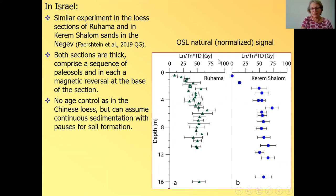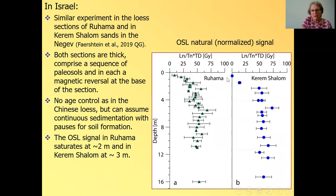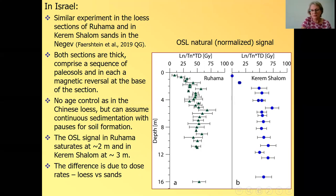Both sections are thick and there is a sequence of paleosols in each and magnetic reversal at the base of the section. We don't have such a good age control like in the Chinese loess, but we know that these sections were deposited over a long time because they have many paleosols in them. So here is very similar to what we saw before. This is the natural signal, the intensity of the natural signal as a function of depth. Here is in Ruhama the loess and these are the sands. And you can see that the OSL signal in Ruhama stops growing at about two or three meters. And in Kerem Shalom, it may be four meters, four and a half. And the difference between Ruhama and Kerem Shalom is because Ruhama is loess, the dose rate is higher and the saturation will occur earlier. So we see that the saturation is found everywhere in nature and the signal does not grow forever.